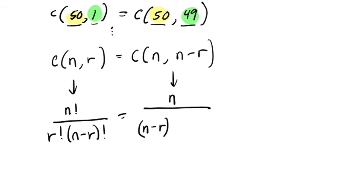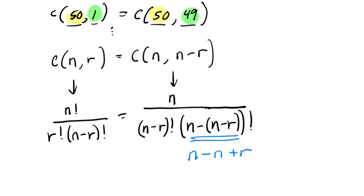And right here, we distribute our negative sign, and that's going to be n minus n plus r. Right? We subtract the n, n subtract a negative r.